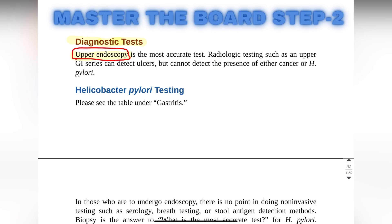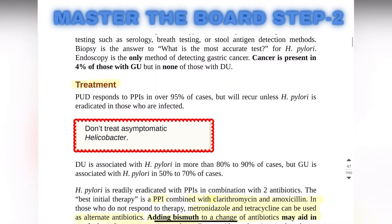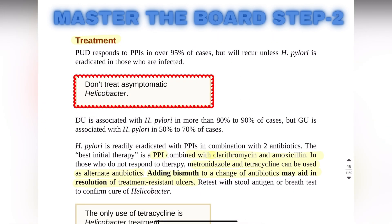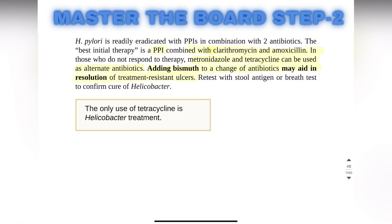H. pylori testing is also done. For treatment, peptic ulcer disease will respond to PPI in over 95% of cases, but it can recur if there is H. pylori infection. The H. pylori infection must be eradicated, which is done with PPIs in combination with two antibiotics.